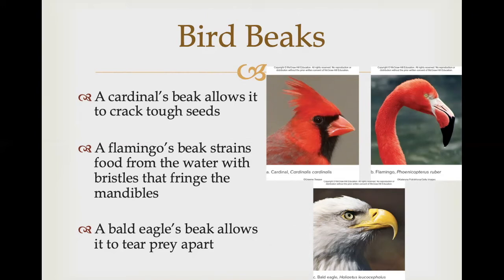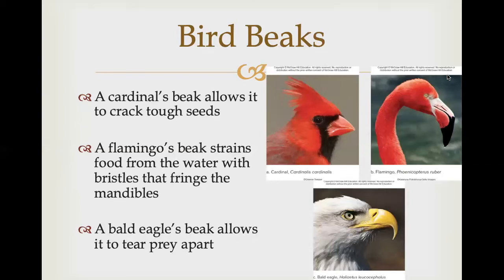Examples of bird beak diversity include the cardinal, whose beak is shaped to crack seeds; the flamingo, whose beak is modified for straining food from water with bristles fringing the mandible; and the eagle, whose beak allows it to tear prey apart.